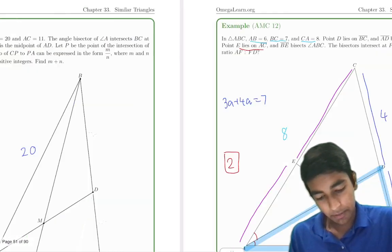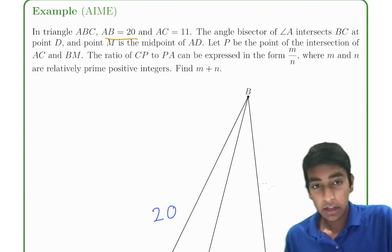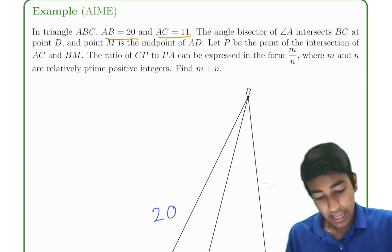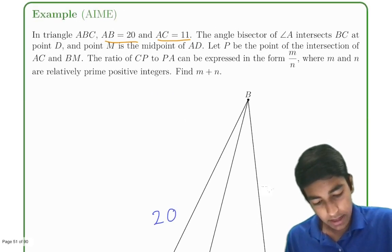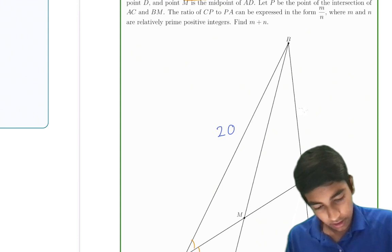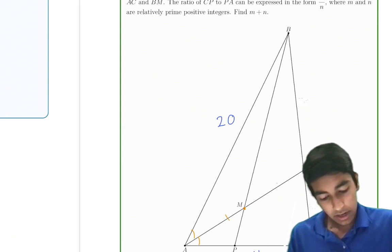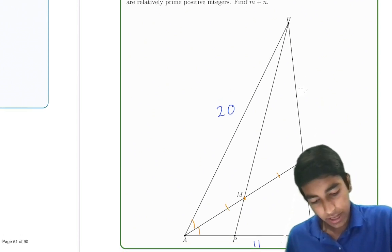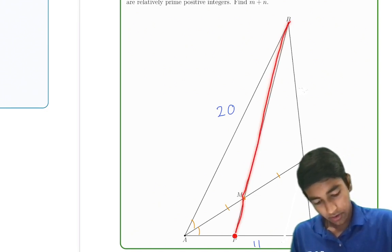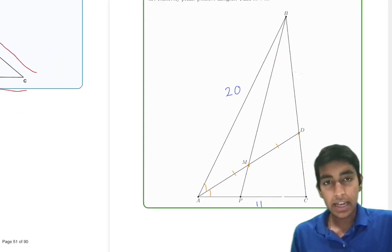Now let's take a look at another example from the AMC. In triangle ABC, AB equals 20, AC is 11. The angle bisector of A intersects BC at a point D. And point M is a midpoint, so let's draw that there. And point P is the intersection of BM and AC. So if we extend this line BM all the way there, that's the intersection point P.